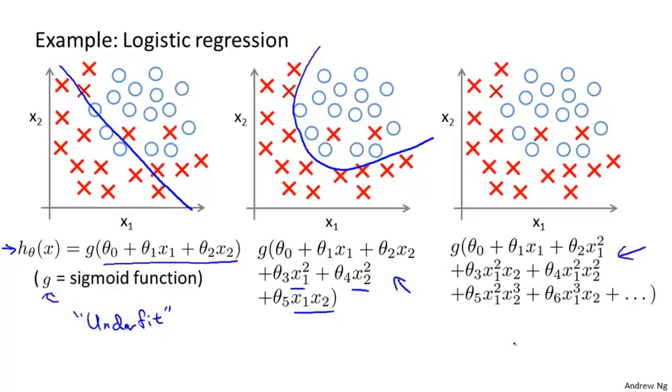And finally, at the other extreme, if you were to fit a very high-order polynomial, if you were to generate lots of high-order polynomial terms as features, then logistic regression may contort itself, may try really hard to find a decision boundary that fits your training data or go to great lengths to contort itself to fit every single training example well. And if the features x1 and x2 are for predicting maybe cancerous malignant benign breast tumors, this really doesn't look like a very good hypothesis for making predictions. And so, once again, this is an instance of overfitting and of the hypothesis having high variance and being unlikely to generalize well to new examples.